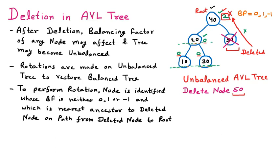In this case, the root itself is the problem, so the whole tree will be rotated. But in a bigger tree, if any other node along the path from the deleted node to the root is problematic, only that particular area will be rotated. This is the deletion in AVL: find the defaulter node from the deleted node toward the root, and rotate the tree from that defaulter node.